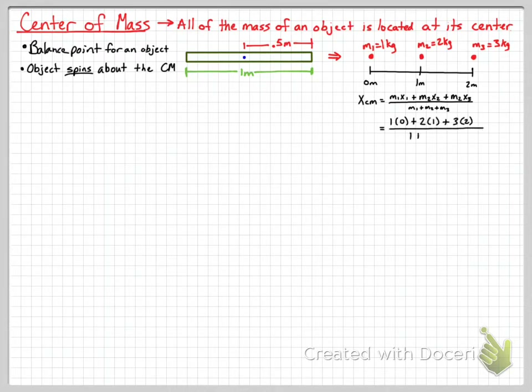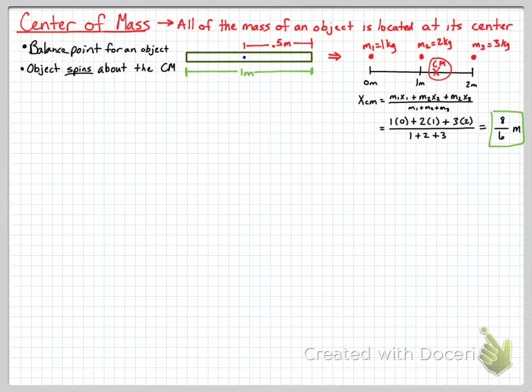When we do the math: 1 times 0 (the first object is at position 0), plus 2 times 1, plus 3 times 2, all over the total effective mass. We get 8 over 6 meters, or 1 and 1/3 meters. So the center of mass is located just past 1 meter, in between 1 and 2 meters — 1/3 of the distance away from 1 meter, or 2/3 of the distance away from 2 meters.